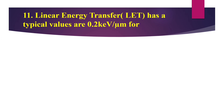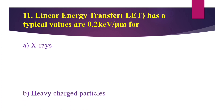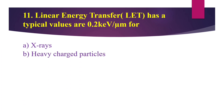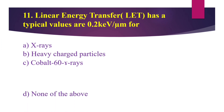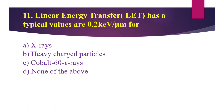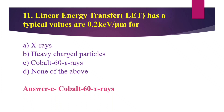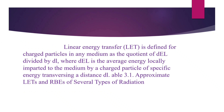KeV means kilo electron volts. The options are: option A, X-ray; option B, heavy charged particles; option C, cobalt-60 gamma rays; and option D, none of the above. The answer is option C, cobalt-60 gamma rays. Now let's see the explanation.